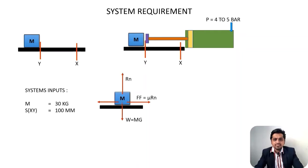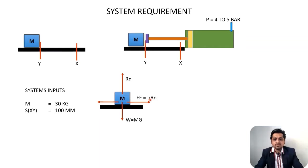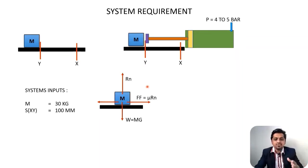Let's look at the physics — specifically the forces acting in this case. The weight of the body (M × g) acts downward, and the normal reaction from the surface is equal to the weight. Since the block is moving horizontally, the frictional force (μ × N) acts in the opposite direction. To move the block from X to Y, we must overcome this frictional force.